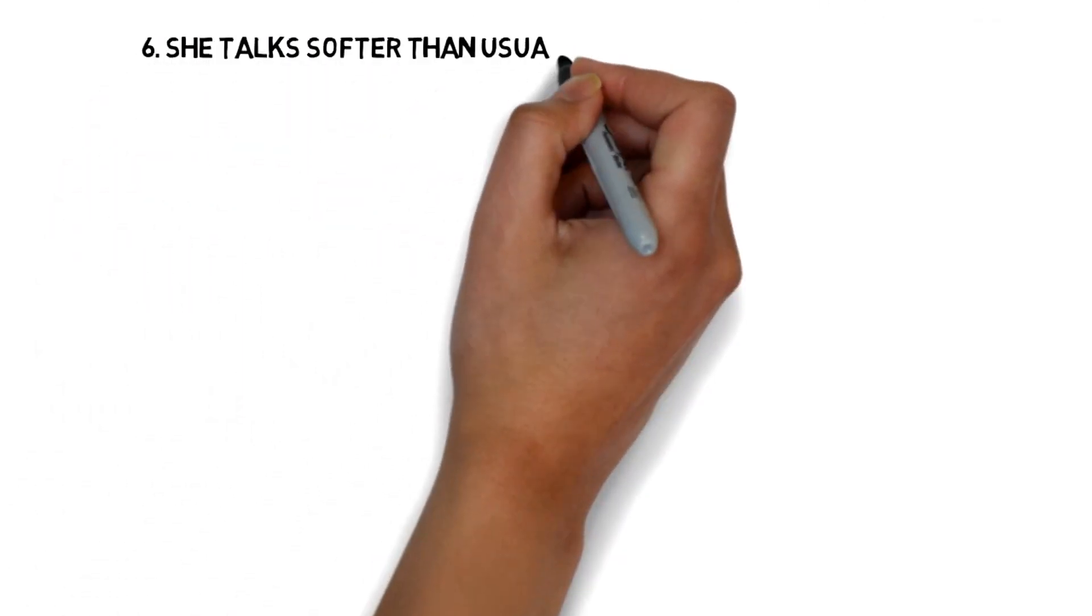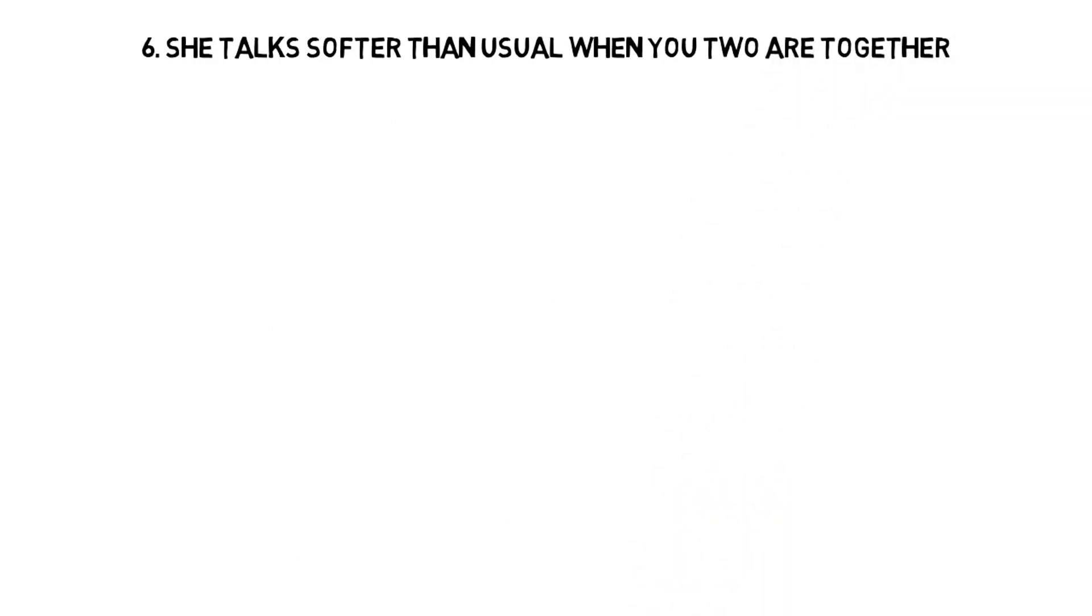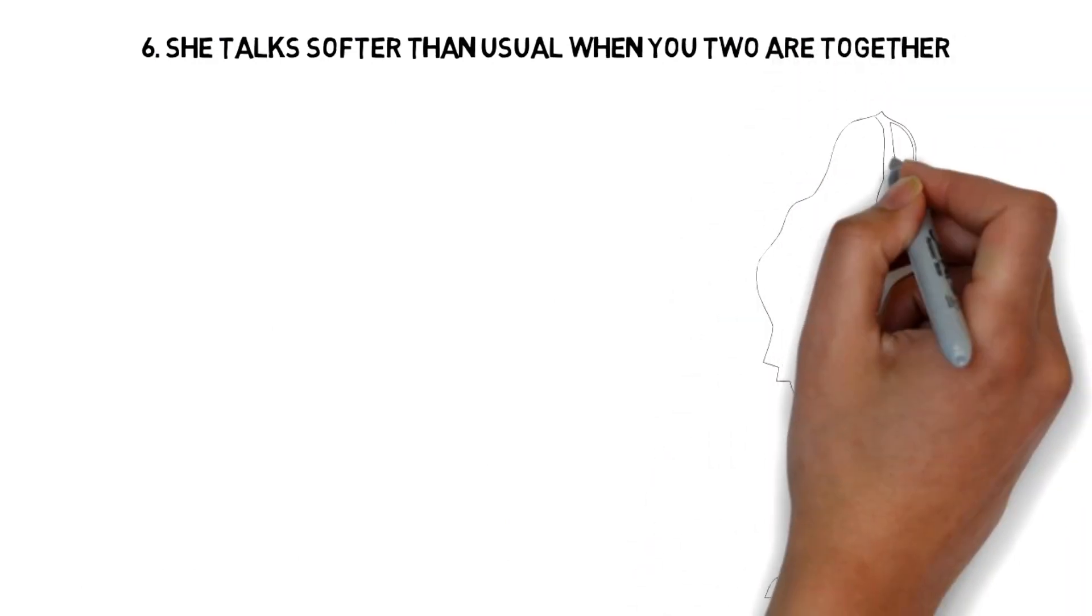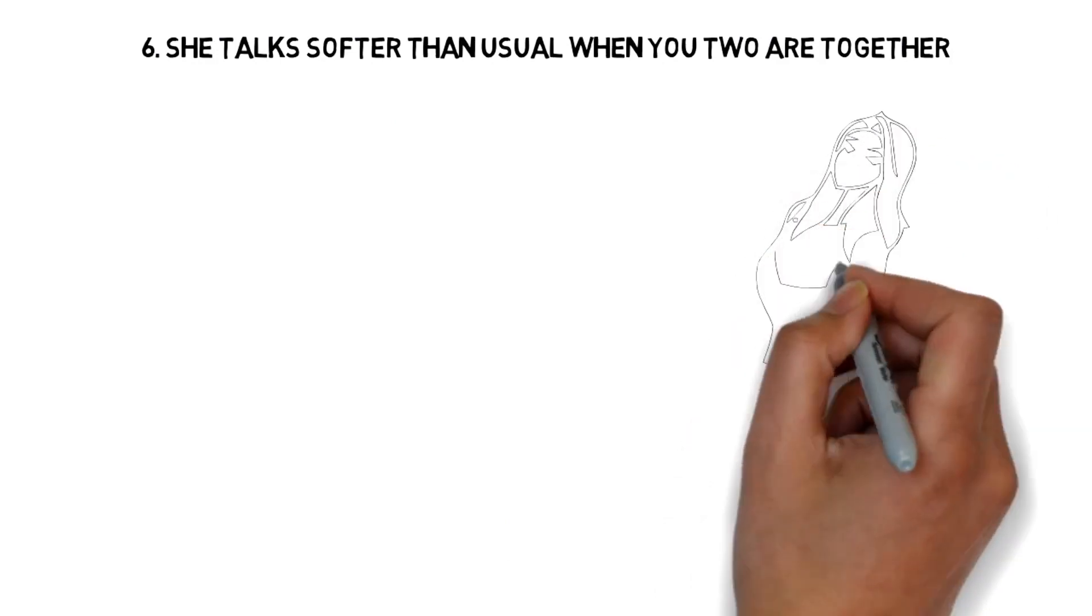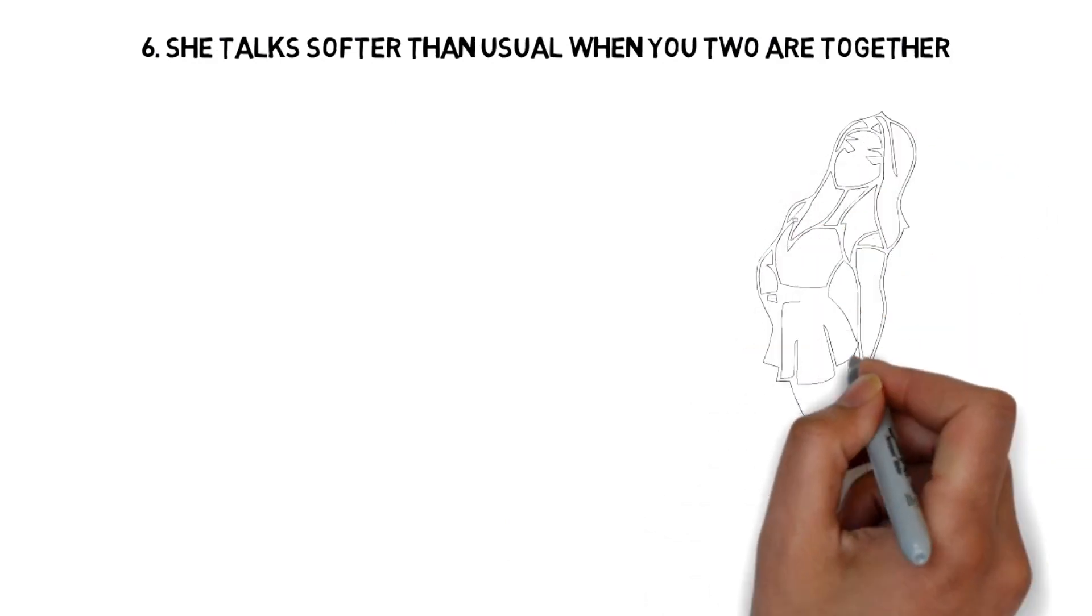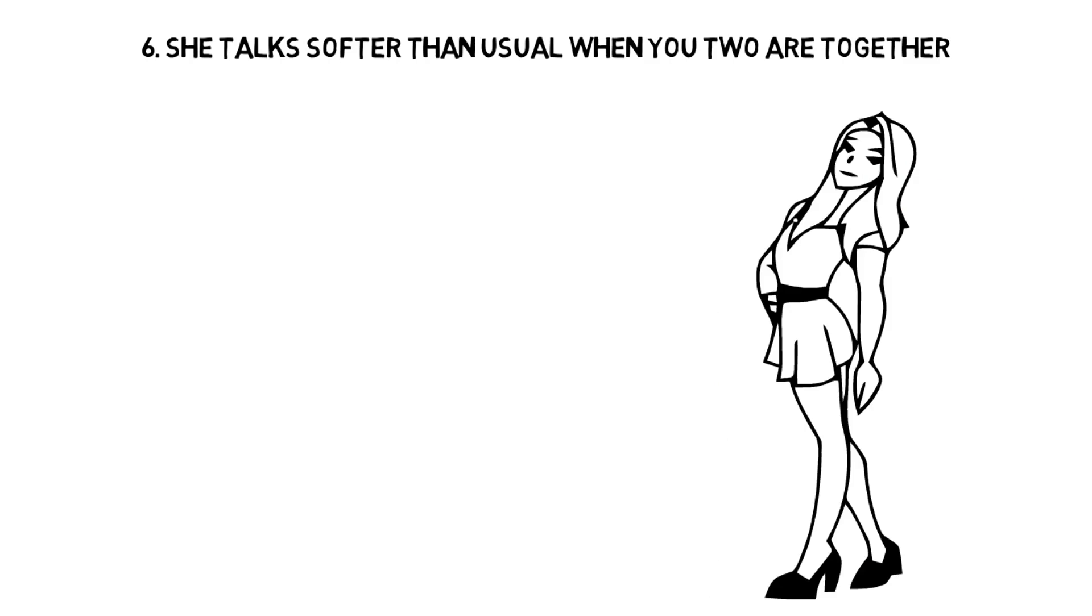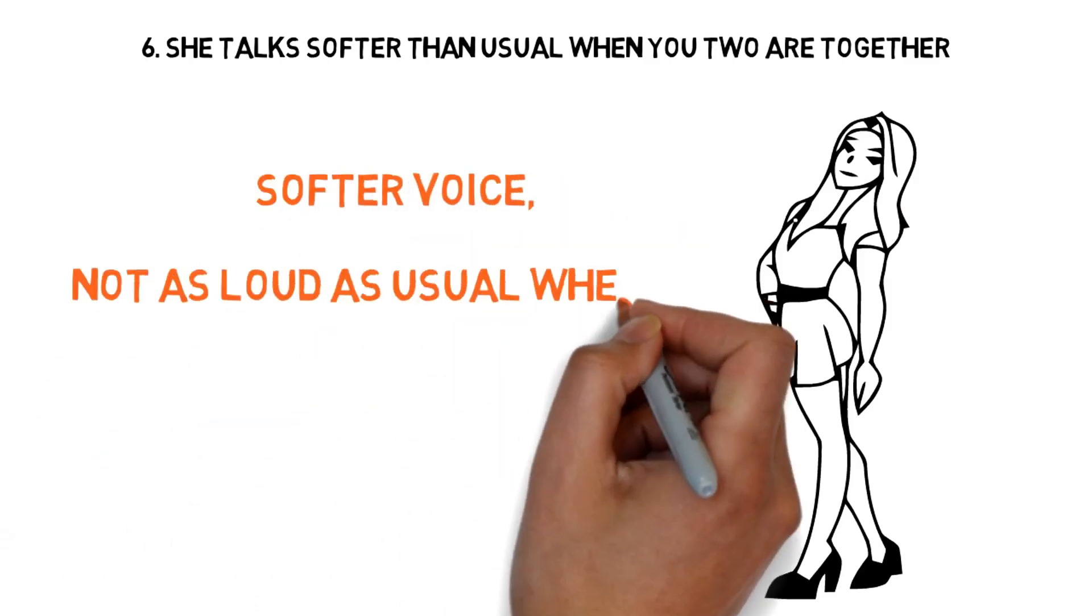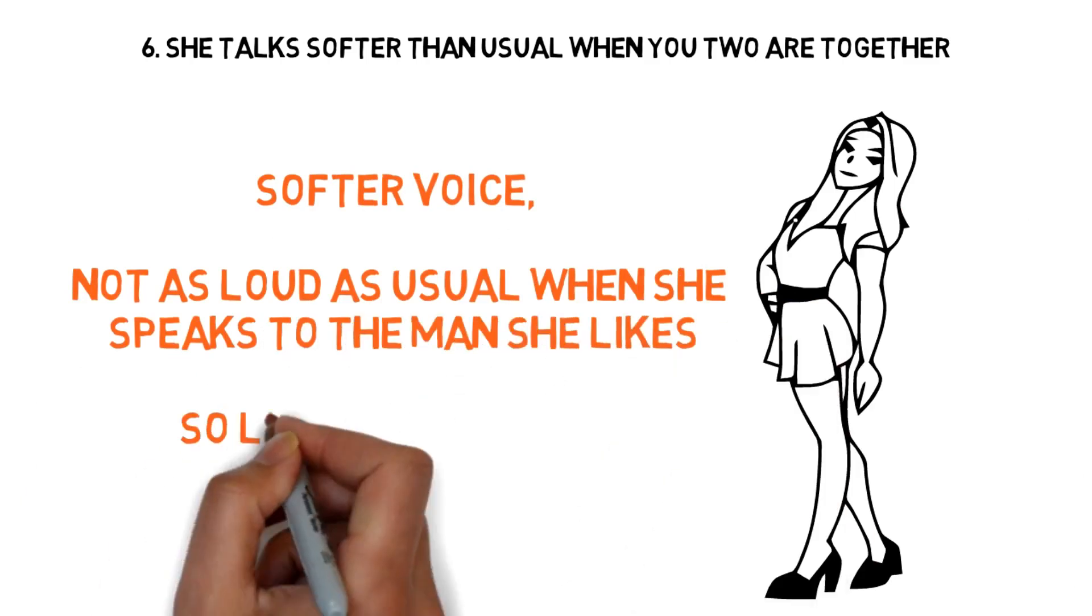6. She talks softer than usual when you two are together. According to Synergology and the study of body language used in seduction, in order to know if a woman is in love, we have to pay attention to her voice. In fact, it has been proven that attracted women tend to speak with a softer voice, not as loud as usual when she speaks to the man she likes. So listen carefully.